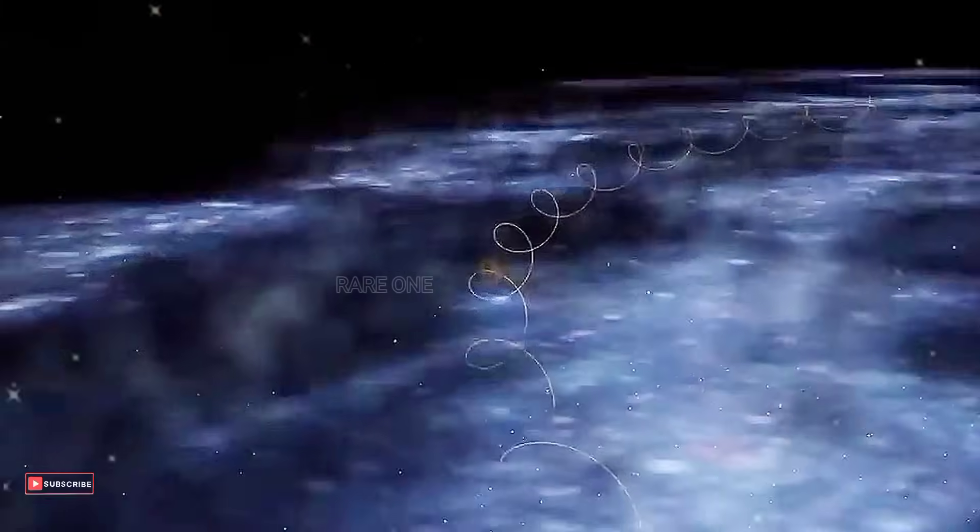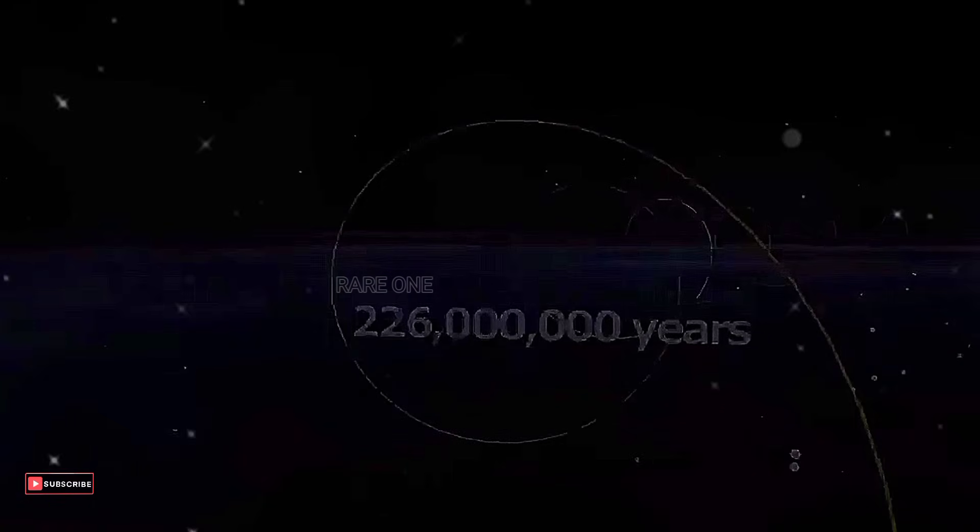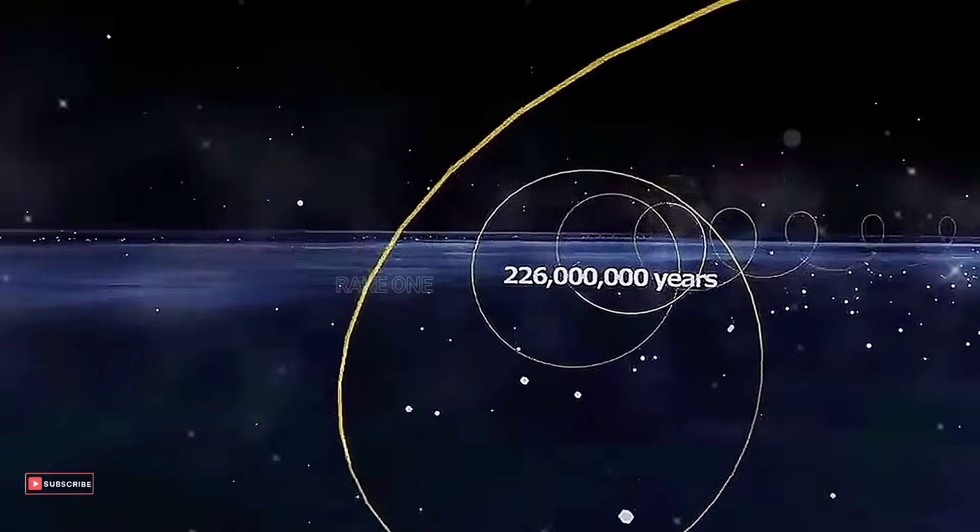Now, considering the Sun's age at 4.6 billion years, and Earth's emergence about 100 million years later, you'd think the Sun has completed around 20 loops through the galaxy, dragging Earth along for about 98% of that cosmic journey.